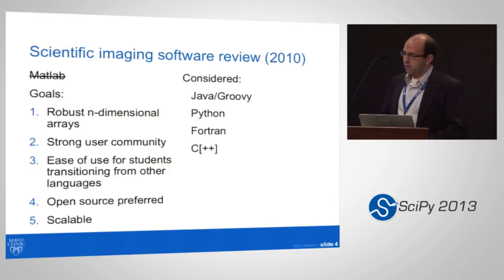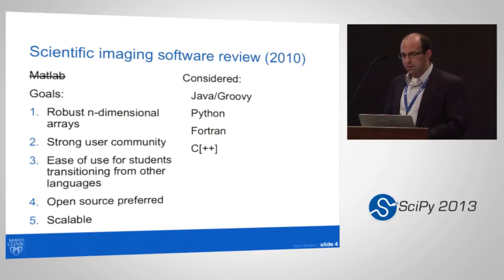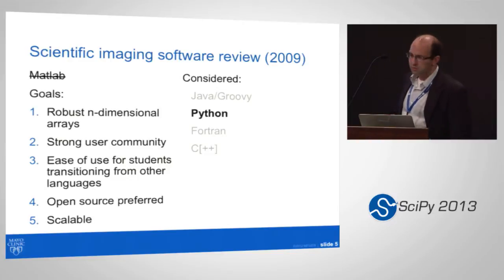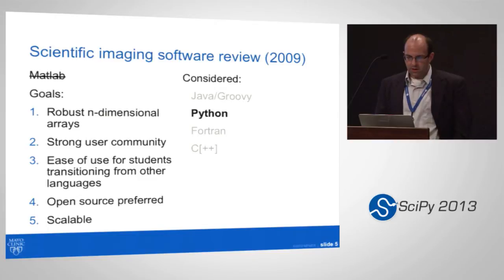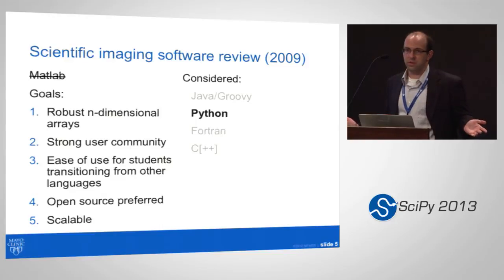The ones that made the final cut are probably no surprise to most people here: Python obviously among them. There were some people working in Java and Groovy, one group that loved packaging C code in Lua, and then the ubiquitous Fortran, which practically all of science used to be written in. Of those, Python came out as pretty much the clear winner. And we have no regrets whatsoever — it's been the absolute right decision for us.